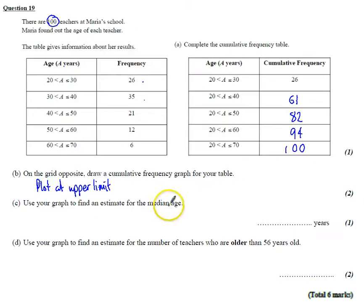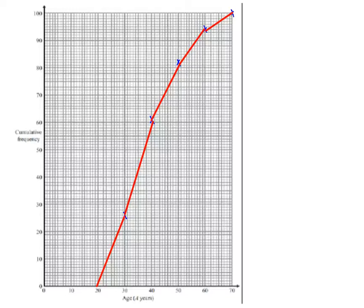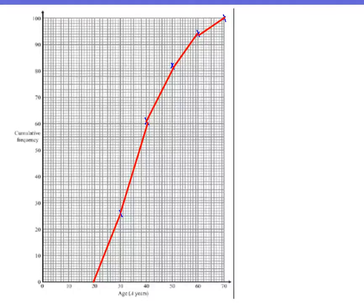Use your graph to find an estimate for the median. We'll do that in just a sec. And use your graph to find an estimate for the number of teachers older than 56. Well, median often comes with interquartile range. It doesn't in this question. We're just asked to find the median. Median is half. So all I need to do is at half my people, there are 100 people. My graph goes up to 100. I apologize for my lines, actually. My lines are a little bit off. You need to be more accurate than that. But my graph goes up to 100. So half of 100 is 50.